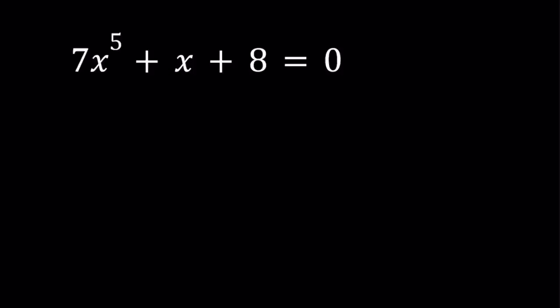Let's go ahead and take a look at how we can solve this problem. Obviously, we don't have a formula for it, but there are ways that some quintics can be solved. There's basically a group of quintics called solvable quintics, and there's a lot of theory behind it. We're going to focus on the coefficients here. Notice that 7, 1, and 8 kind of give us a clue.